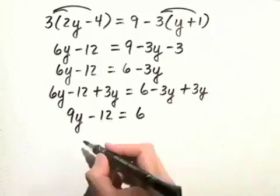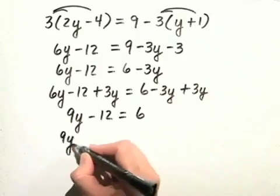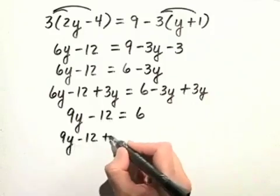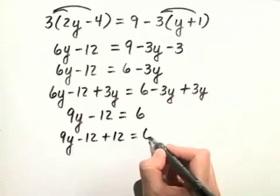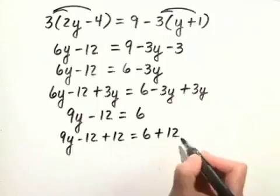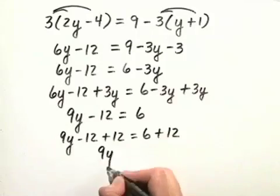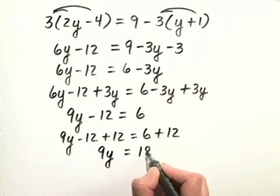Next, we'll add 12 to both sides of this equation. 9y minus 12 plus 12 is equal to 6 plus 12. So we're left with 9y is equal to 18.